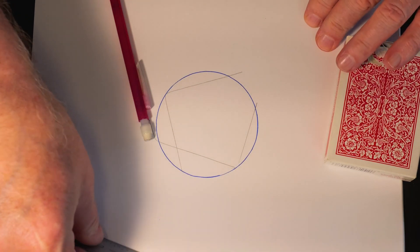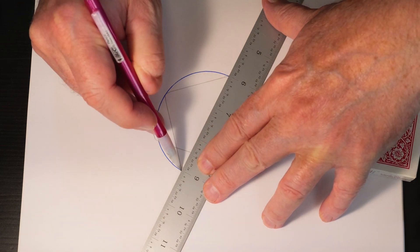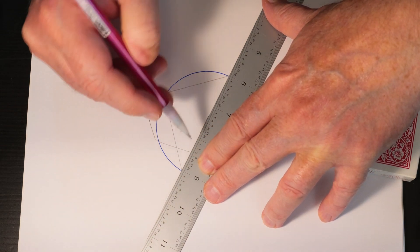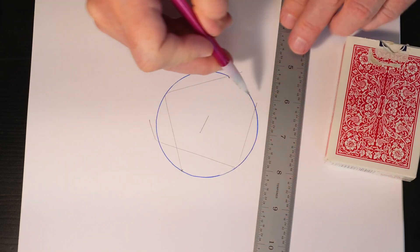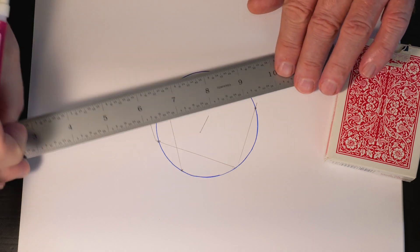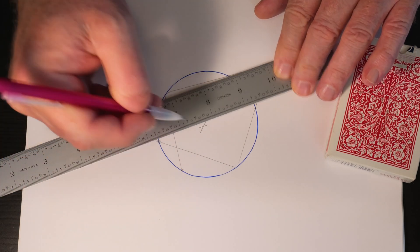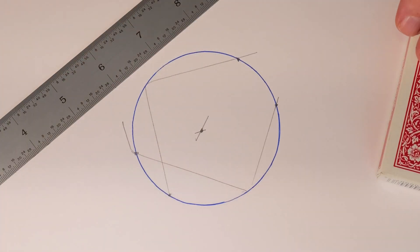Now all we need to do is connect the two outside points of those lines. Here's for our first square, here's for our second square. So we're just connecting those lines and that's how we get the center of our circle.